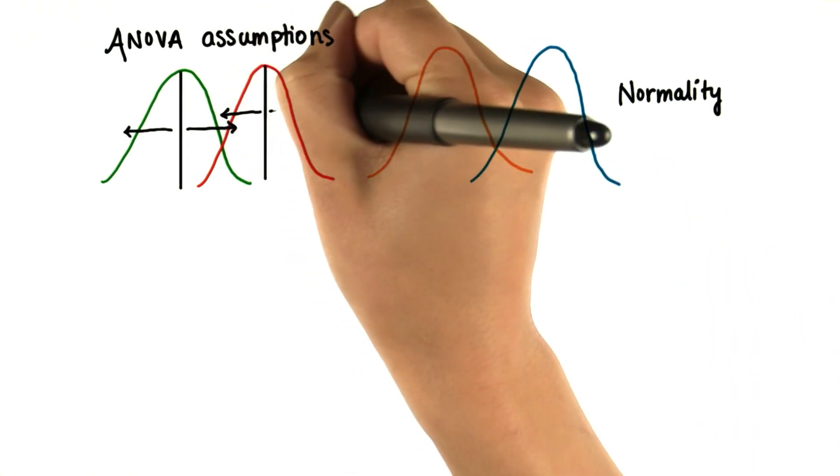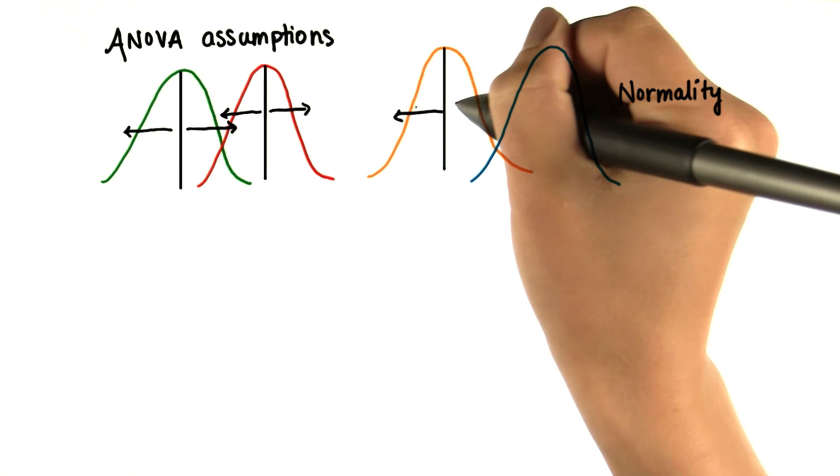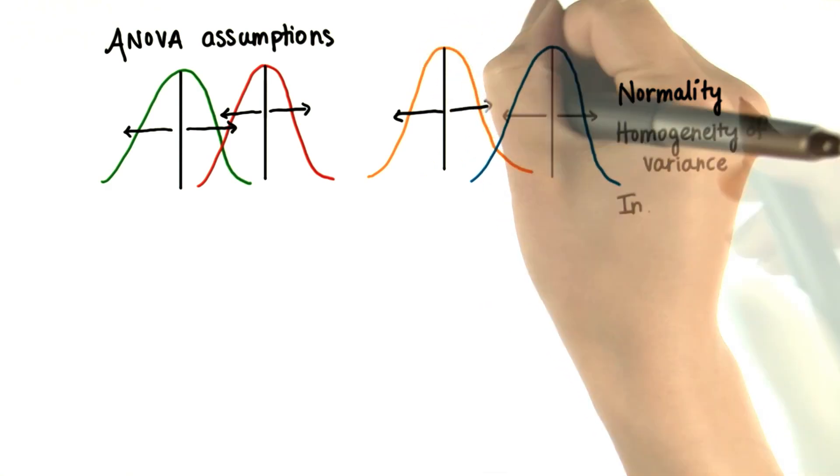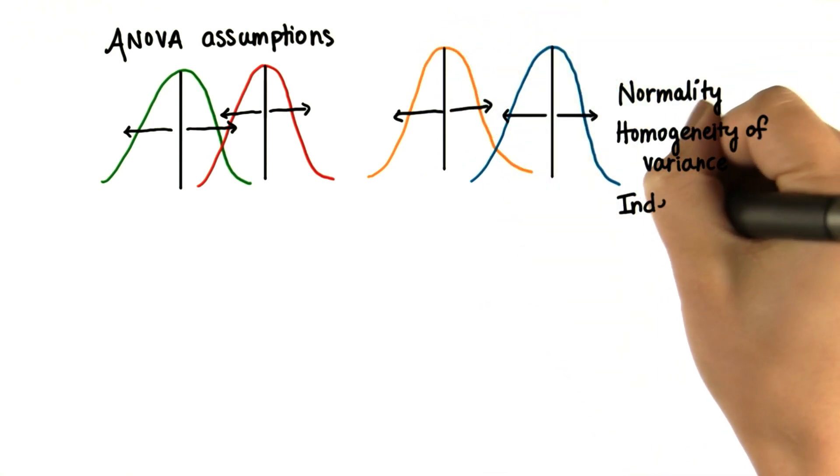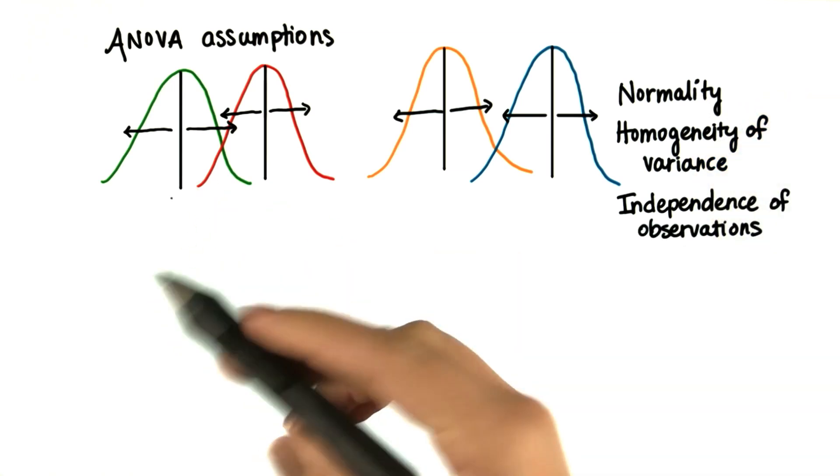Another is homogeneity of variance. The data come from populations that have equal amounts of variability. And finally, independence of observations. The results found from one sample won't affect the others.